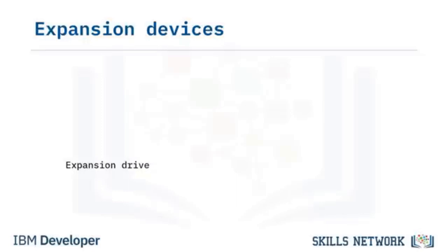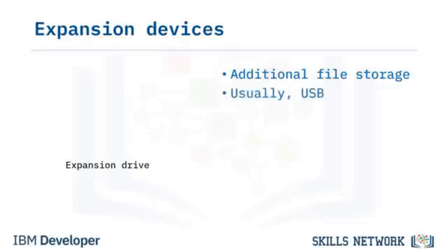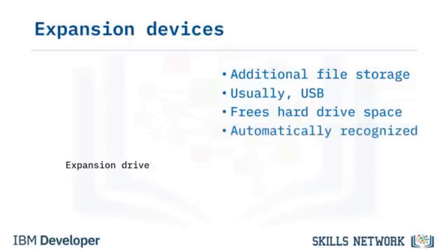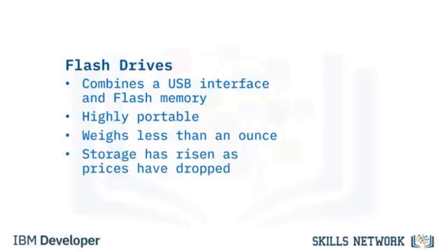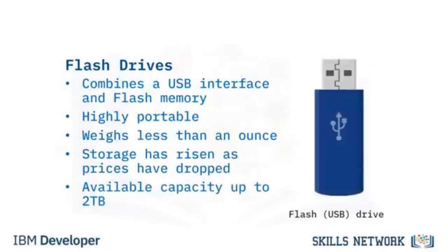An expansion drive provides extra storage and typically attaches via USB. It consolidates files and frees computer space, and is automatically recognized by Windows with no software to install. USB or thumb drives are one example, with storage capacity up to 2TB. A USB flash drive includes flash memory with an integrated USB interface — it is removable, rewritable, and much smaller than an optical disk. As of 2018, 2TB flash drives were the largest available.